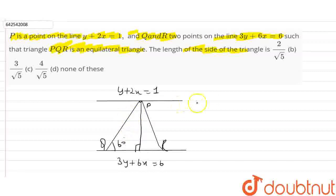Now we know that the two lines y plus 2x is equal to 1 and 3y plus 6x is equal to 6. If we divide this by 3 we get y plus 2x is equal to 2. Now we can say that the coefficients of x and y are equal so these two lines are parallel lines.